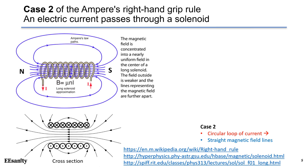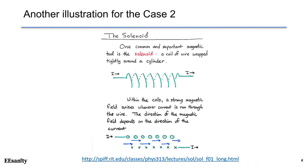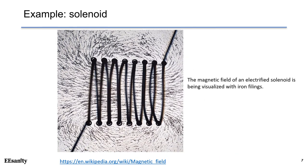In this particular case, we can use the right-hand rule differently to simplify the analysis. As shown in the illustration, we can wrap the right hand around the solenoid with the fingers in the same direction of the current, and the thumb points in the same direction of the magnetic field. Here is another illustration of case 2 — iron filings are used to display the magnetic field. When the solenoid is energized, the magnetic field is created, and the iron filings align themselves with the magnetic field for easy illustration.